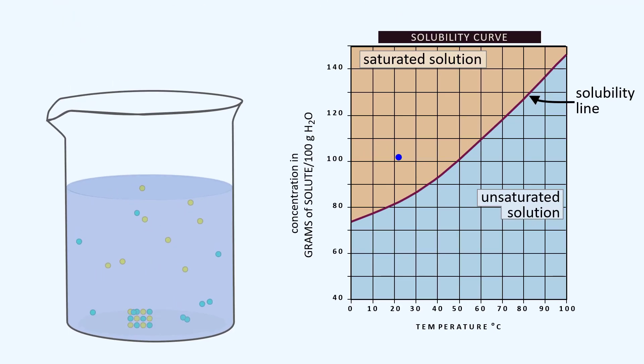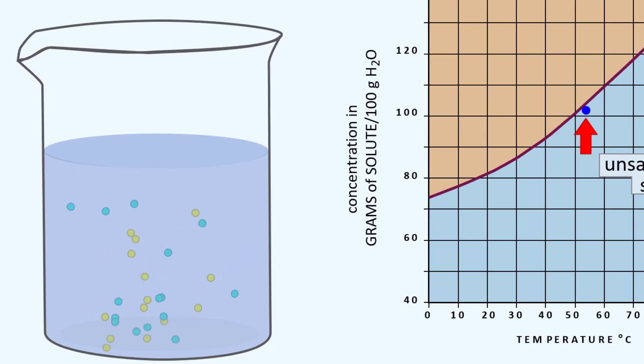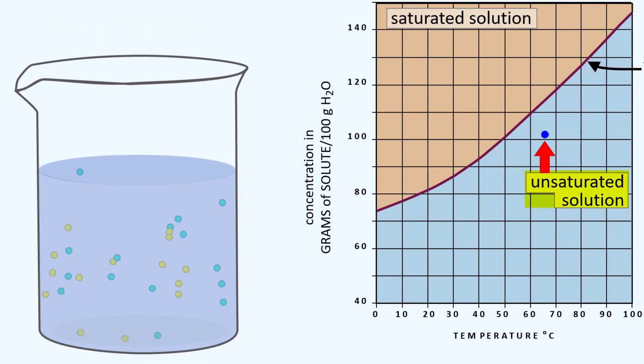Solubility is dependent on temperature. Let's see what happens to that solid as we heat up the solution. Yes, it dissolves. It breaks apart. Right as the blue dot crosses the solubility line, the last of the particles break up. So we are now unsaturated. We have heated it up where we can actually add more solute to the solvent and have them dissolve.